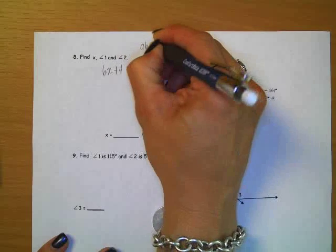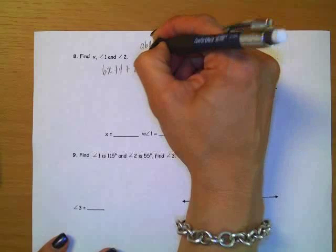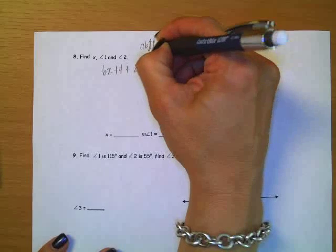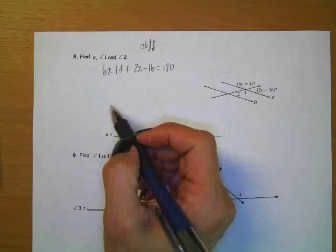So A and B are parallel. Those are parallel lines. Okay. So now let's just solve for x.